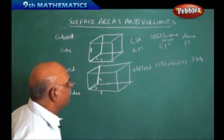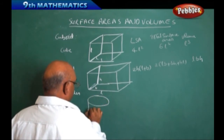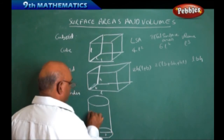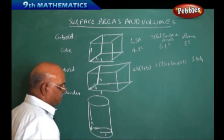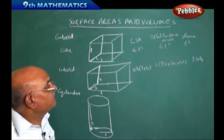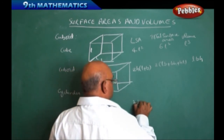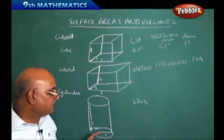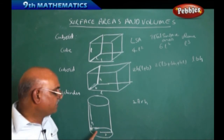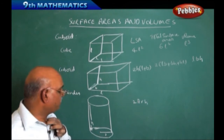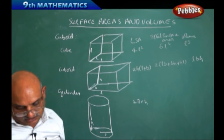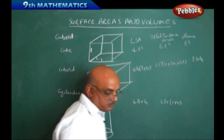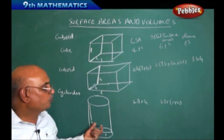For the cylinder, the figure looks like this. This is the bottom, and this is the radius, and this is going to be the height of this cylinder. The lateral surface area is equal to 2πRH. Pi we will consider as 22/7. R is the radius. If the diameter is given and you want to reduce it to radius, we divide by 2. The total surface area is equal to 2πR(R + H).